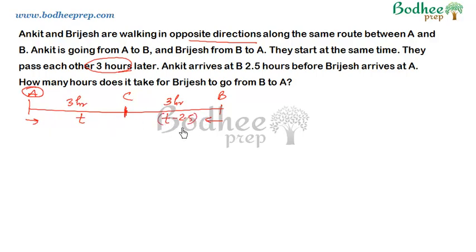Now we have to find how many hours it takes for Vijayesh to go from B to A. This question falls into a category of trick — knowing the end result. There is a shortcut formula we can apply to get the answer within 30 seconds. If you don't know it, I recommend going to the website, to the arithmetic section under time, speed, and distance, where I have given detailed solutions and explanation of how we arrived at that formula.